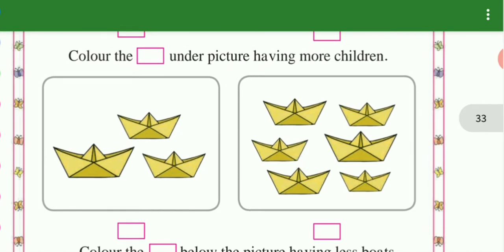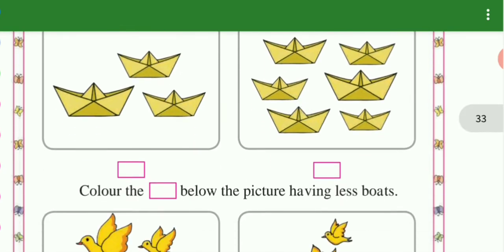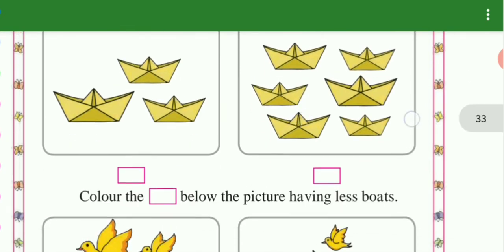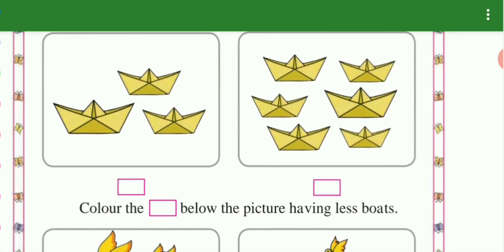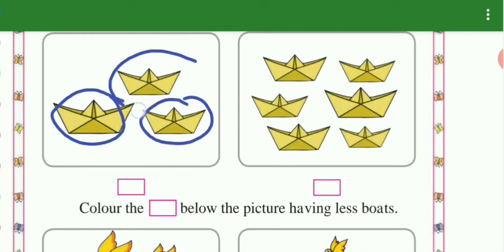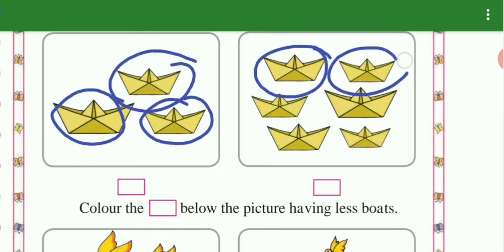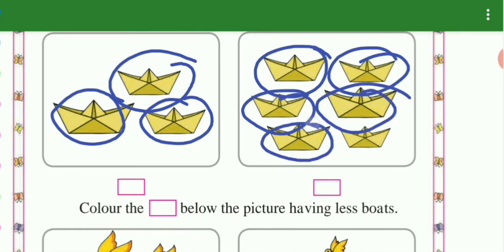Color the box under the picture having more. Color the box below the picture having less boat. So this is less. The number 5 here. Then 1, 2, 3, 4, 5 and 6. So we have 6 and 3.